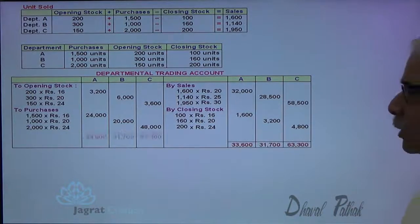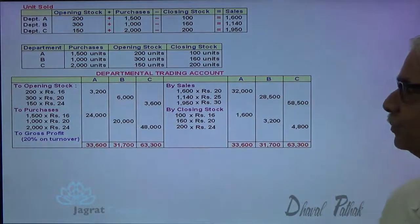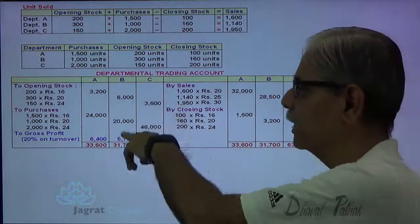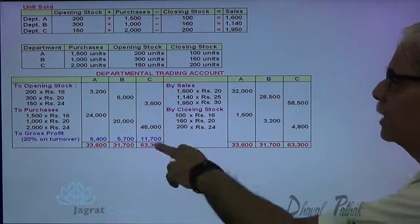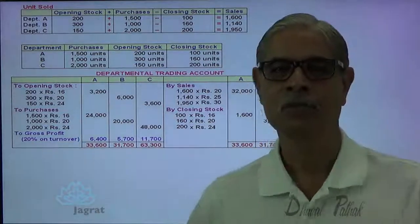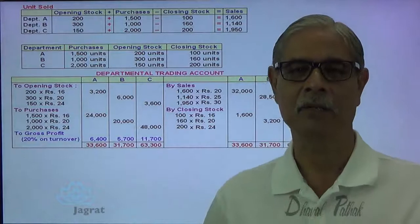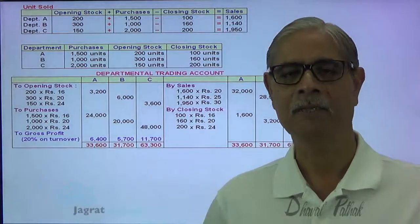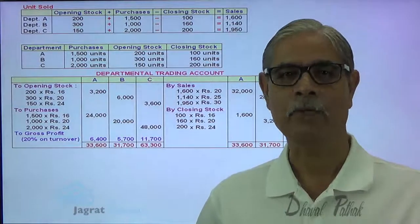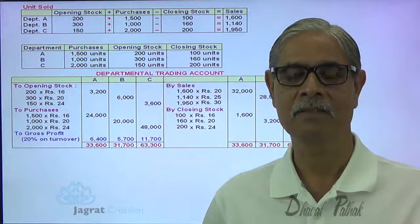Gross profit is computed for each department: Department C shows sales of 31,700 minus opening stock and purchases, giving profit of 5,700. This is how the departmental trading account is prepared for this type of sum. This is an important sum frequently examined in ICW and CA exams.